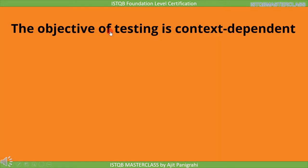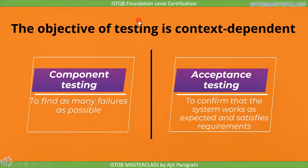Until now we discussed general testing objectives, but the objectives are context dependent. To understand this, let's look at two different testing levels: component level and acceptance level. When you perform testing at component level, your objective is to find as many defects as possible so that they are not found during operational use. Whereas at the acceptance level, your objective is to check if the system works as per the customer's requirement.